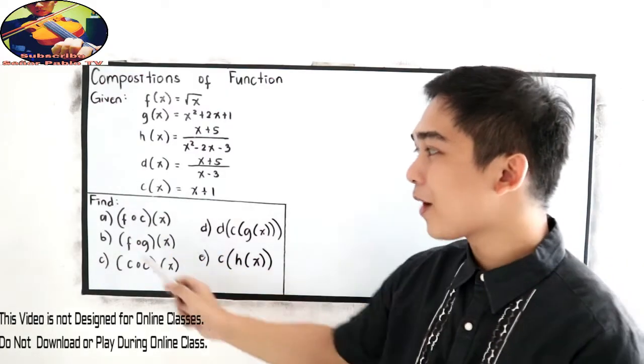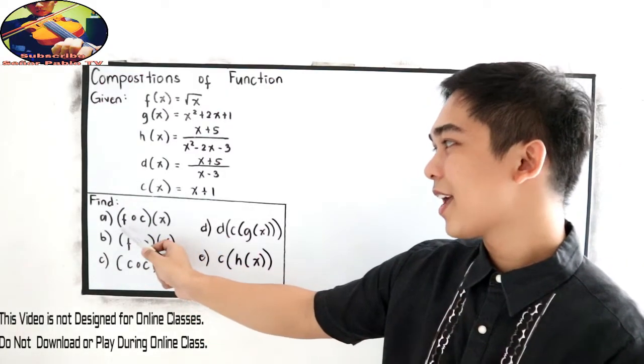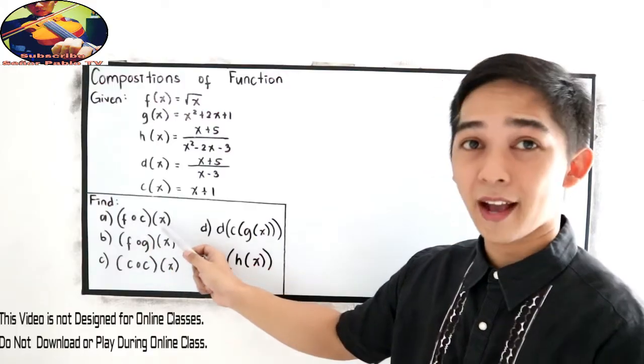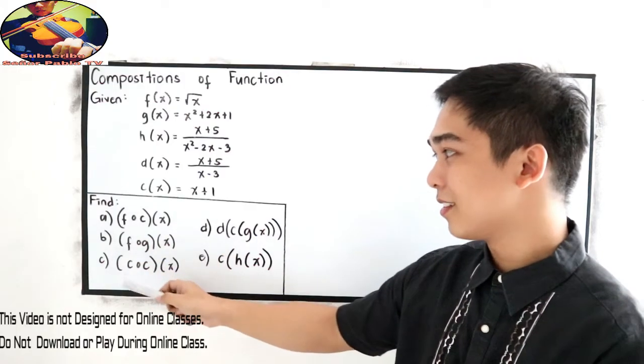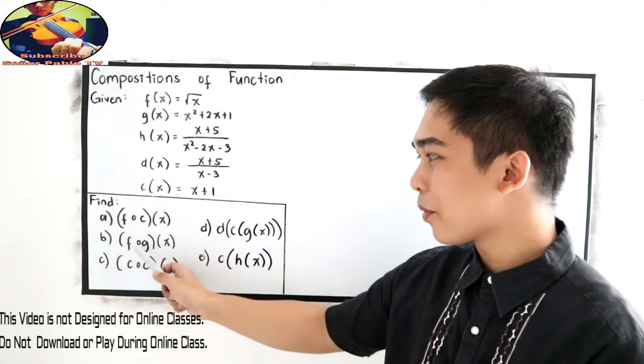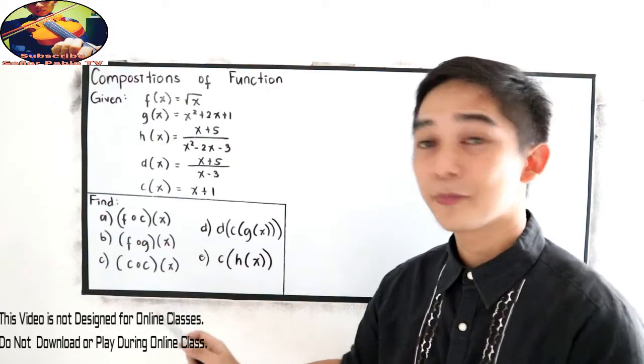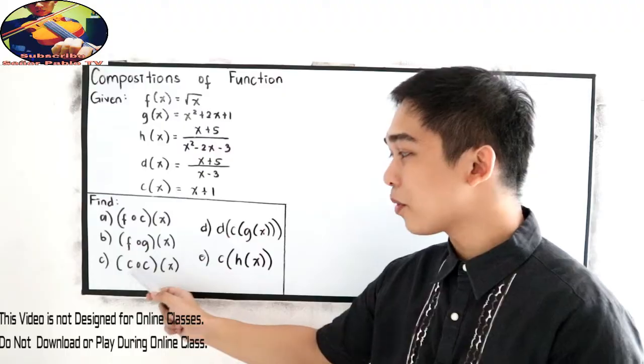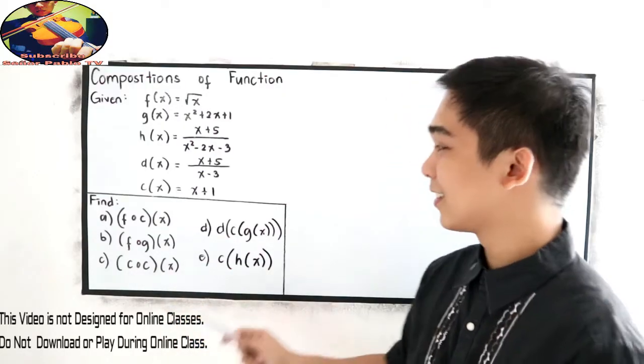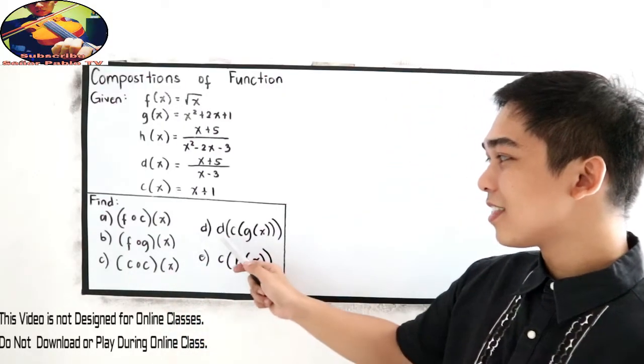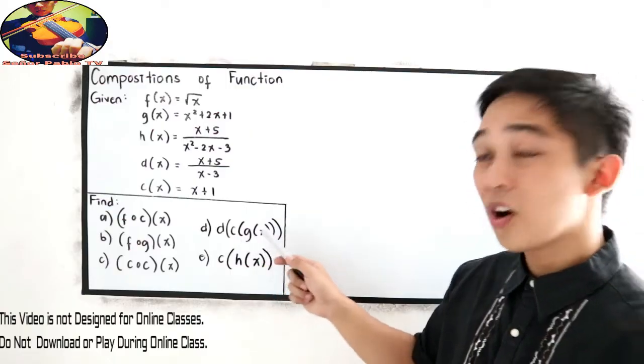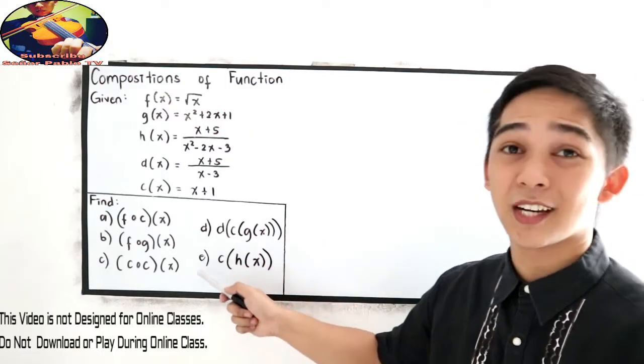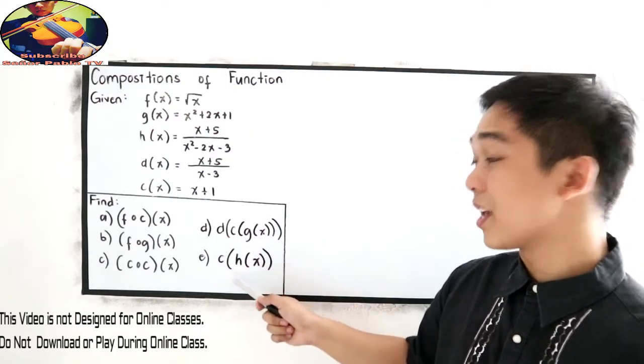We are going to find letter a, f composed of c of x, letter b, f composed of g of x, letter c, c composed of c of x, letter d, d of c of g of x, and for letter e, c of h of x.